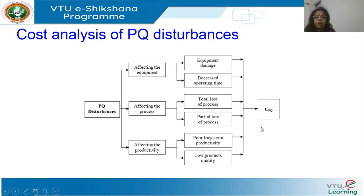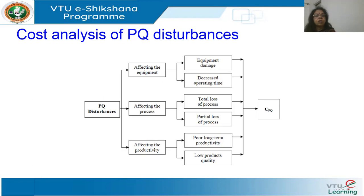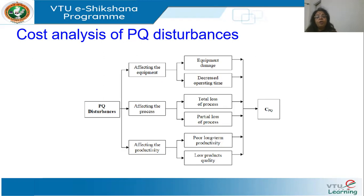Some costs may not be very obvious or measurable. For example, how will you measure life expectancy reduction? How can you tell a motor operated under unbalance has had its life reduced by 10%? It's very difficult to quantify. However, it is a cost, because you have to invest in a new motor earlier since the old motor's life expectancy has come down. An early investment is always equivalent to a cost.